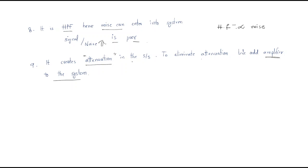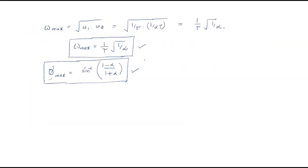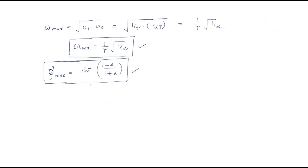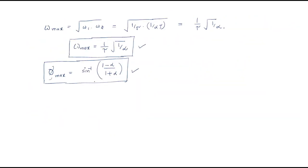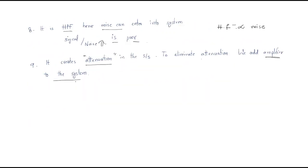It also creates attenuation in the system. To eliminate this attenuation, we add an amplifier, which improves the gain. So this is about the lead compensator: magnitude and phase plots, maximum frequency, maximum phase, and the effects of the lead compensator. I hope all of you understand this session. Thank you.